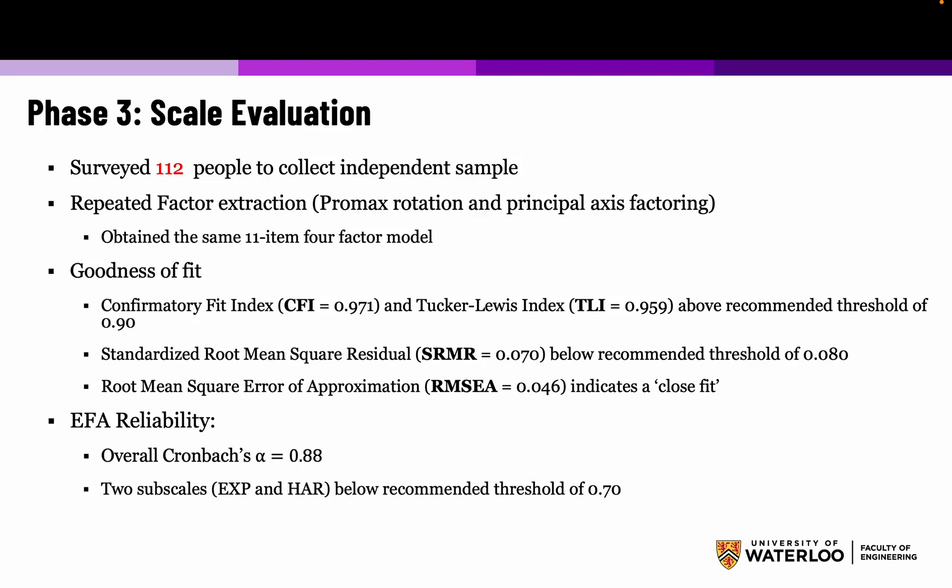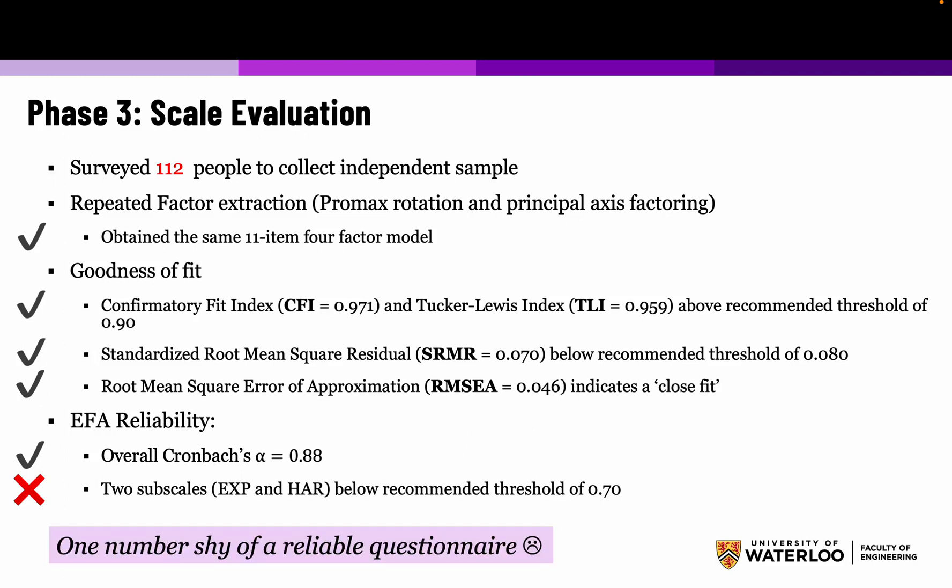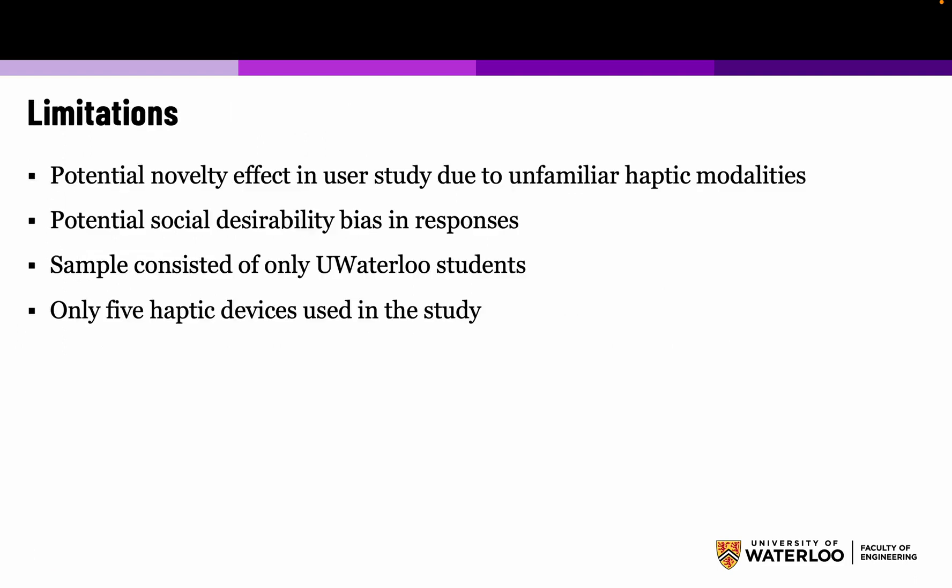We conducted a follow-up study with an independent sample using the same methodology. The short answer is everything checked out except for the reliability scores, meaning we are one number shy of a reliable questionnaire, even though the data provides strong evidence for the structure. There are limitations: potential novelty effects and social desirability bias, the sample consisted only of University of Waterloo students, only five haptic devices were used, and there are other modalities that could be added.